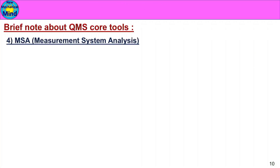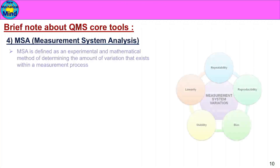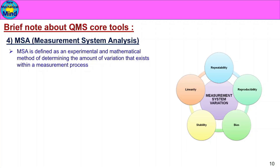Next, MSA — Measurement System Analysis. MSA is defined as an experimental and mathematical method of determining the amount of variation that exists within a measurement process. The following studies will be conducted in MSA, covering location variation and width variation.